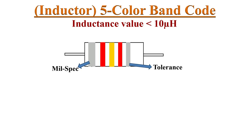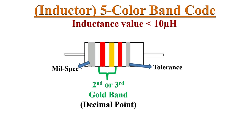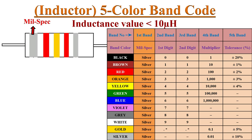For inductance values less than 10 micro-Henrys, a gold band might be used in either the second or third band position. Gold indicates a decimal point. In that case, band 4 is used as a digit value instead of a multiplier.